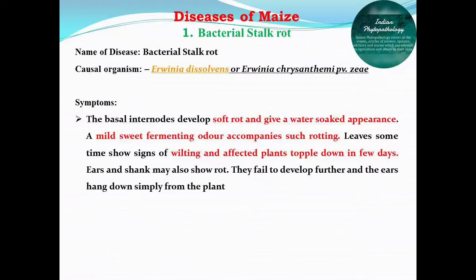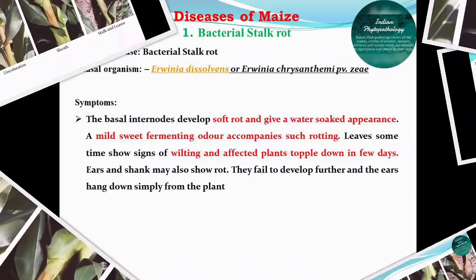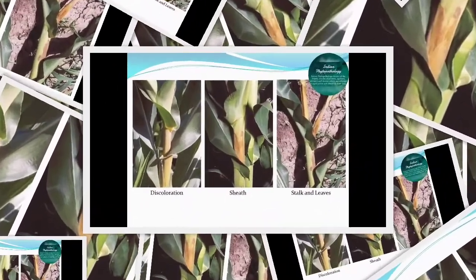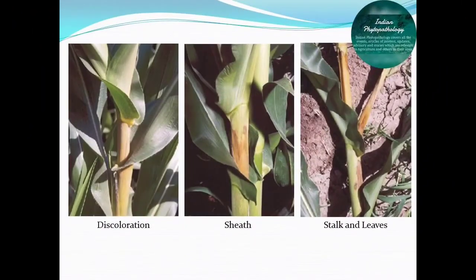First is bacterial stalk rot of maize. The causal organism responsible for bacterial stalk rot of maize is Erwinia dissolvens, also known as Erwinia chrysanthemi pathovar G.